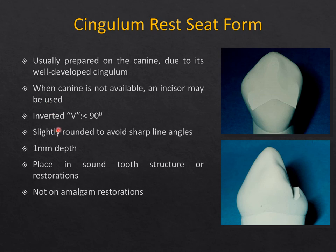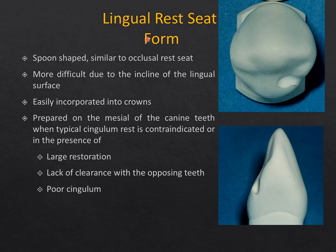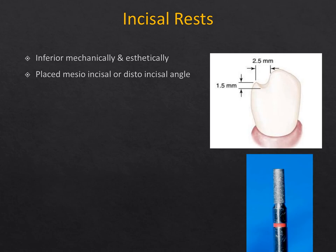Cingulum rests are placed on the cingulum of canines in an inverted V-shape (visible from the lingual aspect). They should be at least 1 mm deep on the cingulum — the densest and thickest enamel area on the canine. They must be placed in sound tooth structure or entirely within restorations — not on amalgam. This rest design is used when applying the RPI system with the canine as the last abutment. Cingulum rests can be incorporated into PFM crowns, with the rest seat entirely in metal, not covered by ceramic.